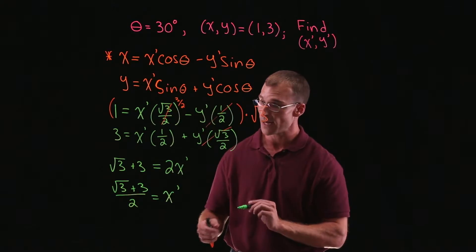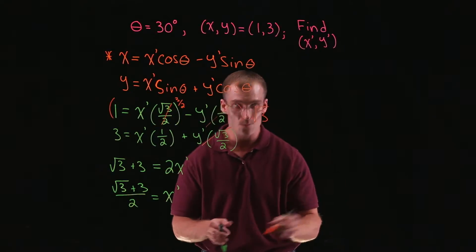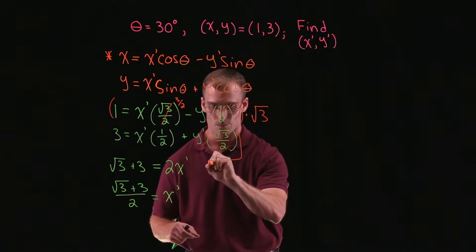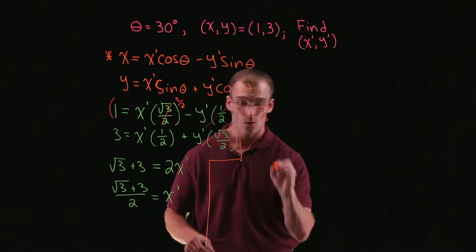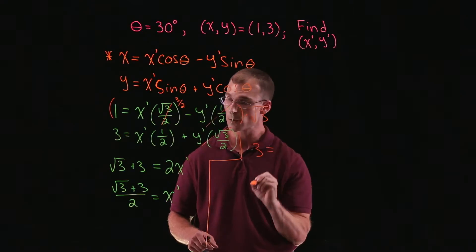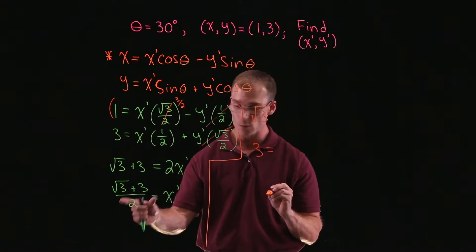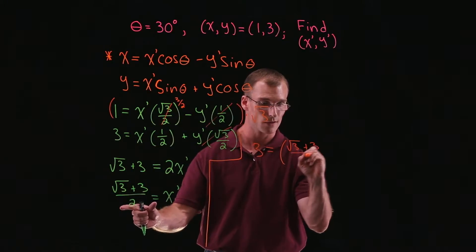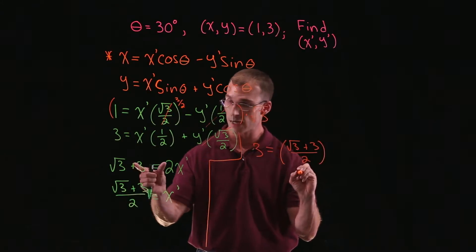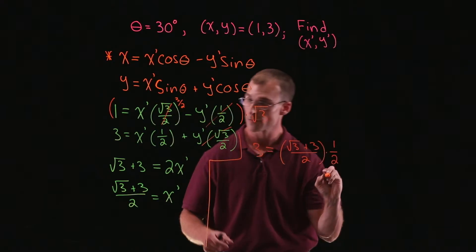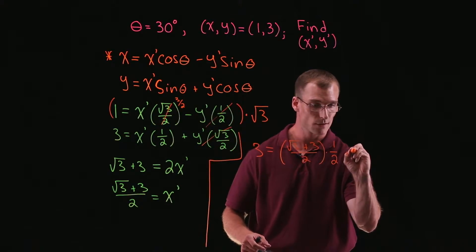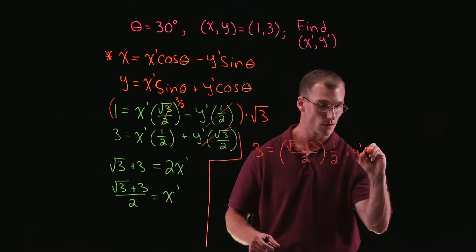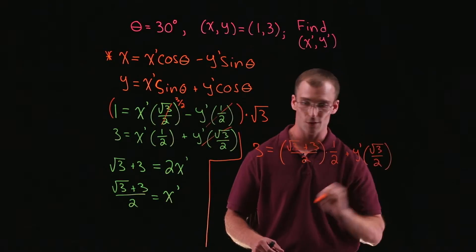It doesn't really matter which equation we use — we'll pick the bottom one. Picking our bottom equation, we have 3 equals — now in place of x prime we're plugging in root 3 plus 3 over 2 — times 1 half, plus y prime times root 3 over 2.